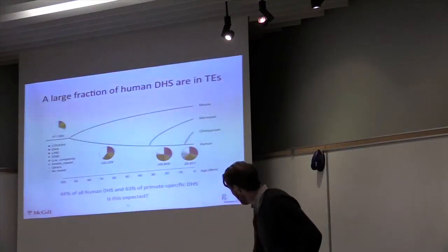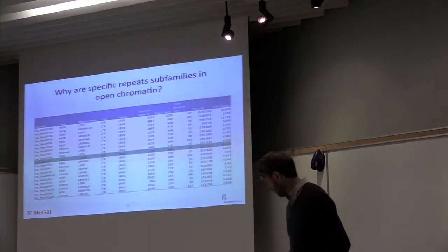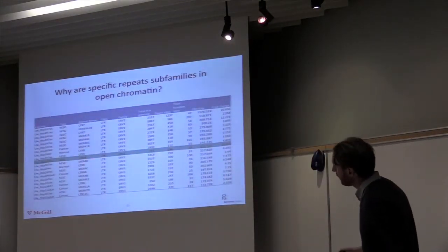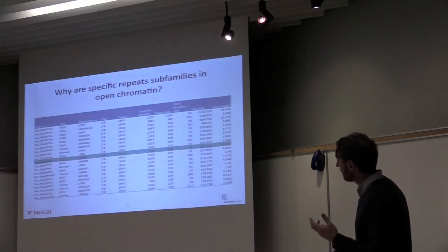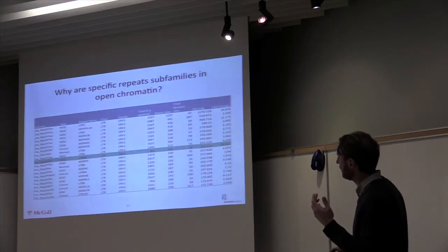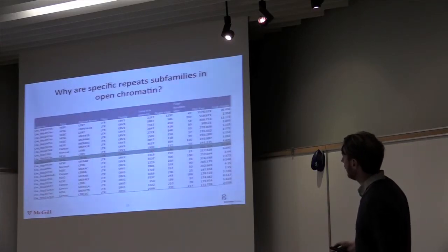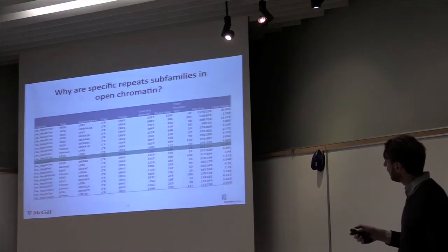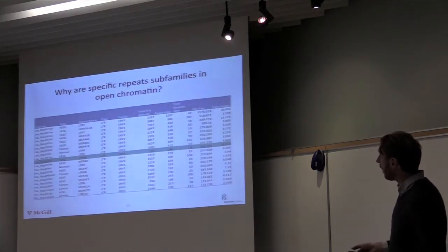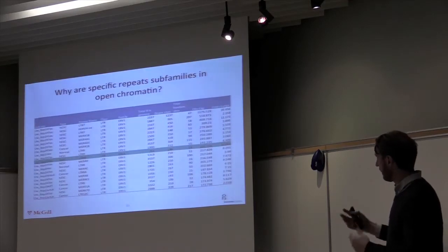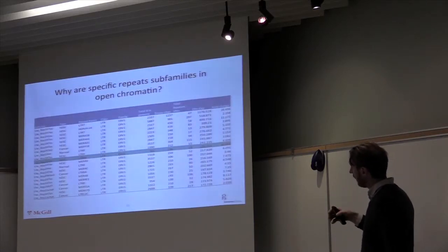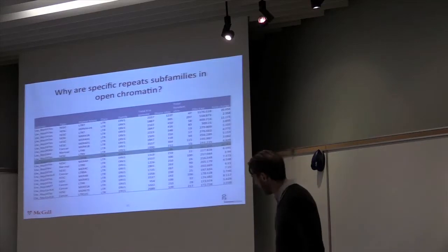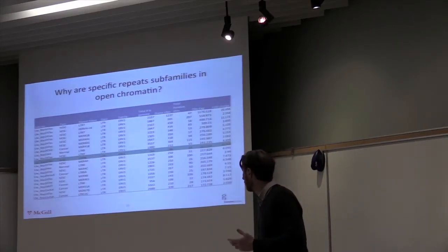Going back to what I said before, it's not completely surprising given that most of the new DNA in the genome is in repeats. To give you a sense of what the data looks like — in human this repeat family LTR9D has 700 instances in the human genome, but 246 of them are in regions of open chromatin. Depending on your model, this is much more than expected by chance. So we can flag these repeats as interesting because they're found in open chromatin more than expected.